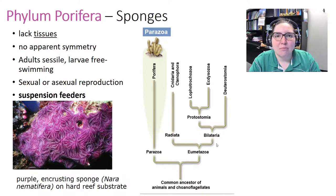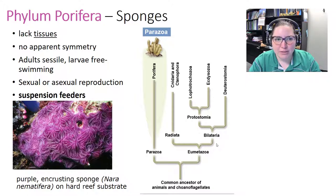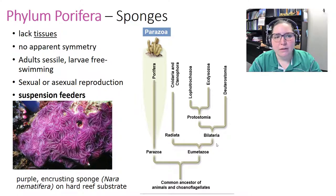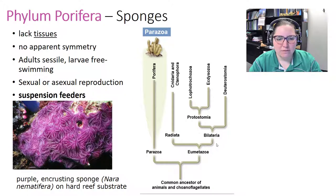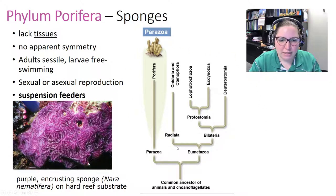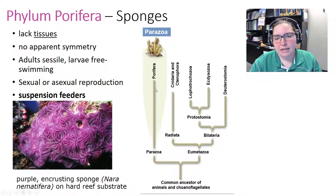Our first animal phylum is Porifera — the sponges. Sponges lack true tissue and have no apparent symmetry. The adult form is sessile but they have free-swimming larvae. They can do either sexual or asexual reproduction and are suspension feeders. On the phylogenetic tree, poriferans are early divergers.